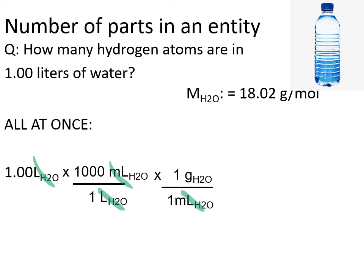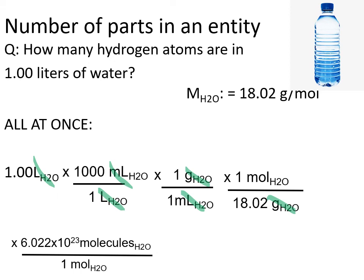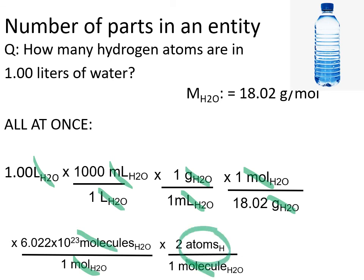We can do the full water calculation in one chain: start with 1 liter, convert to milliliters (canceling liters), then to mass in grams (canceling milliliters), then use molar mass to cancel grams and get moles, then use Avogadro's number to cancel moles and get molecules of water, then finally use the 2:1 hydrogen-to-molecule ratio to cancel molecules of water and arrive at atoms of hydrogen — giving 6.68 × 10²⁵ atoms of hydrogen.